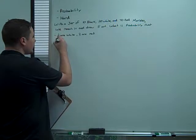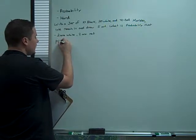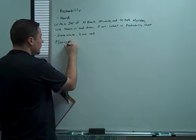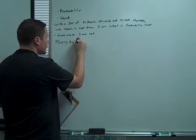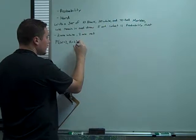The first is the probability that there are two white and two red. The way we would write this is P(W=2, R=2). That seems like a logical way to write it.